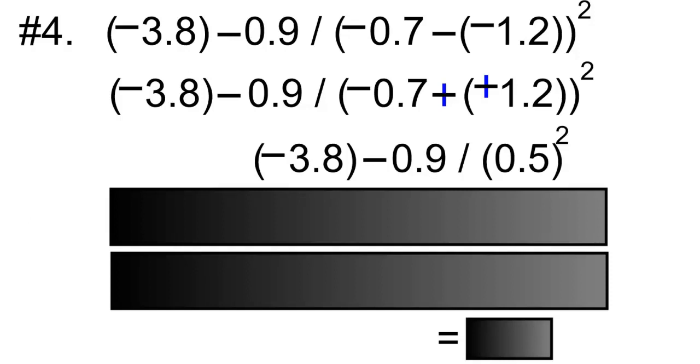Step number two in BEDMAS is going to be exponents, so we'll do the 0.5 to the power of 2 next. 0.5 to the power of 2 is going to be 0.25.